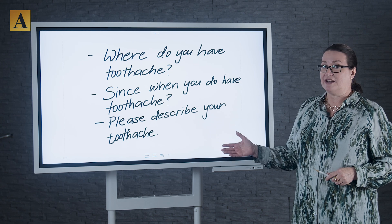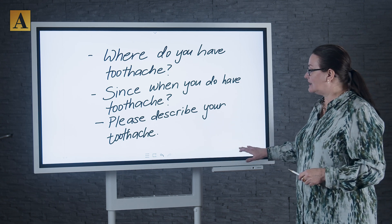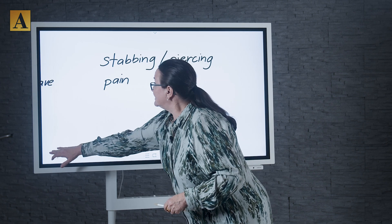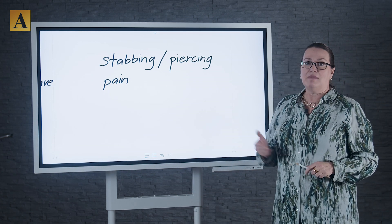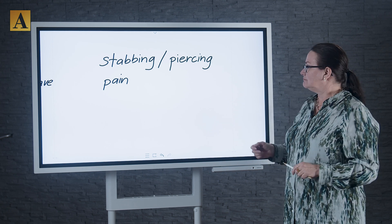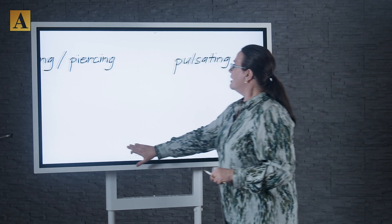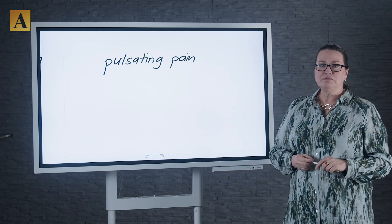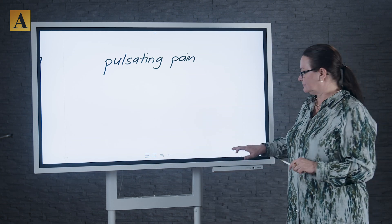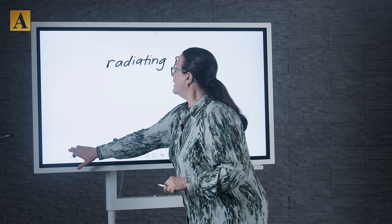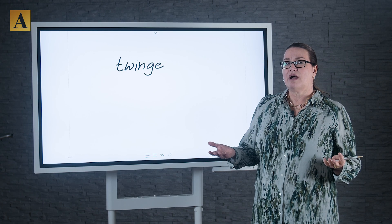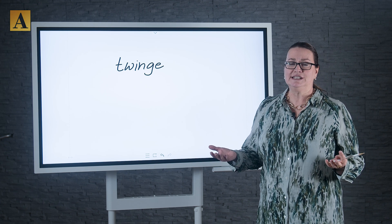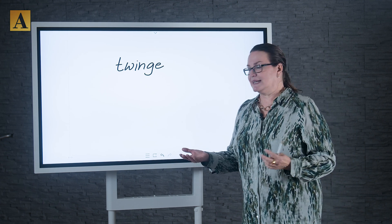Now, you need to know what he's saying very precisely. Is he talking about stabbing or piercing pain? — Dann meint er stechende Schmerzen. Is he talking about pulsating pain? — Dann hat er pulsierende Schmerzen. Or ausstrahlende Schmerzen — radiating pain. Is he describing his toothache as a twinge? — Dann hat er ziehende Schmerzen.